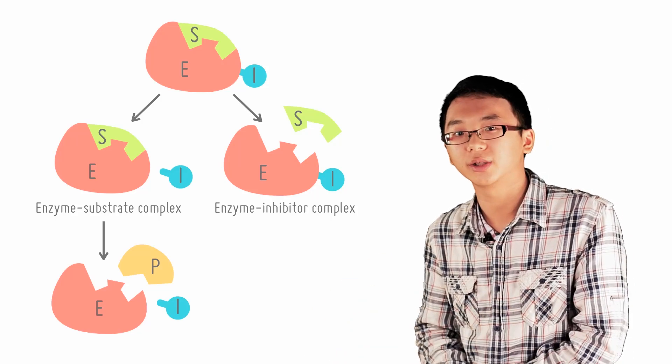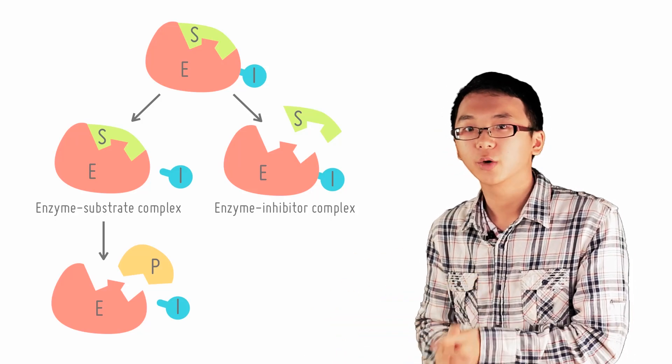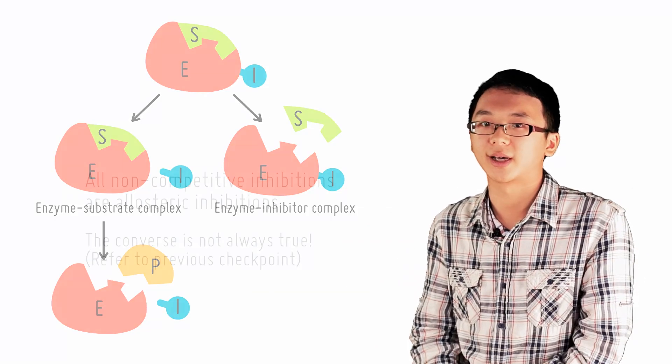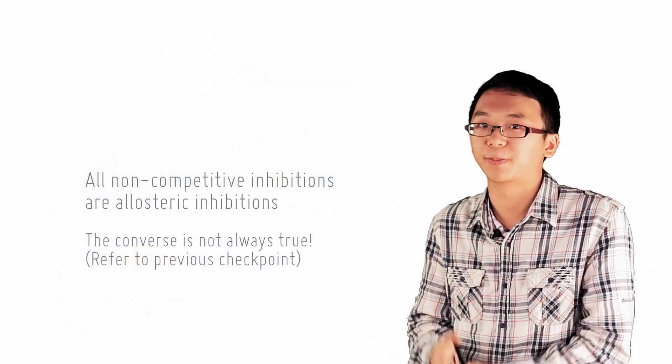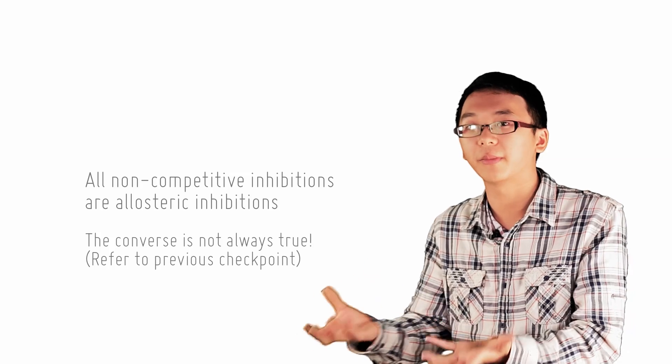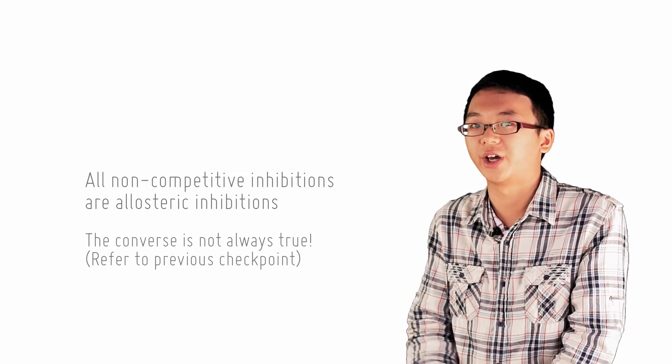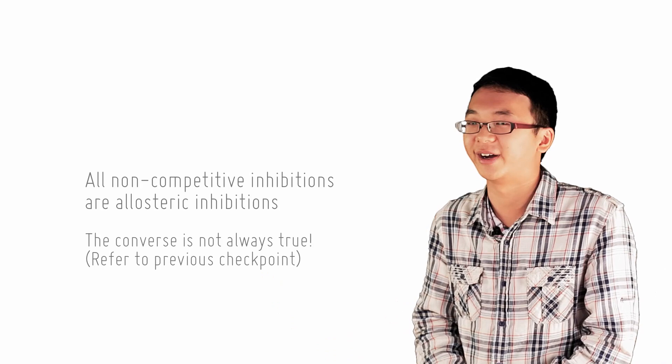Since there is no competition in non-competitive inhibition, we can say that all non-competitive inhibitions are allosteric inhibitions because binding to the active site is already a form of competition. You can't sit on a chair and say that you're not preventing someone else from sitting on a chair, right?